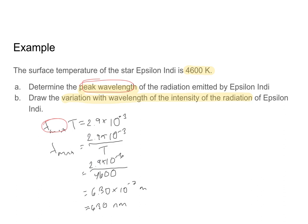So I think this one is pretty straightforward. Part B is a little less so. This asks you to draw the variation with wavelength of the intensity of the radiation of Epsilon Indi. And I think when I see this, my brain thinks, so you want me to draw a picture? But whenever you see the word variation, the word that should come to your mind is graph. So when you're asked to draw variation, that usually means draw me a graph showing the relationship between these two different variables.